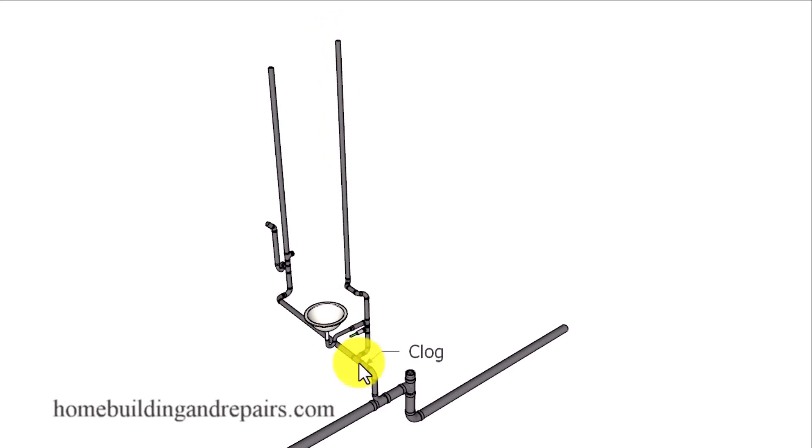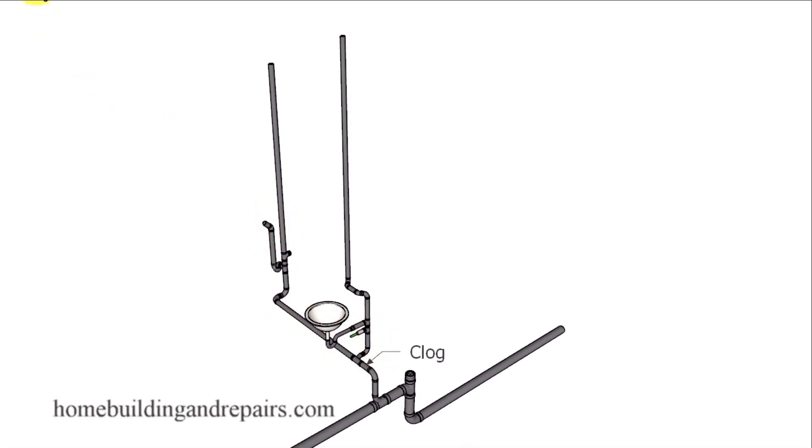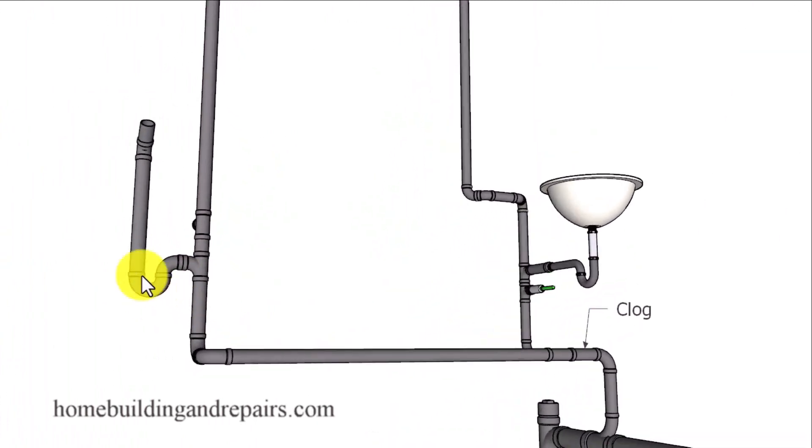However that will not be the case if we move the clog a little further down the line. Because if it's located here and we're going to be running the water into here, we now have an alternative path for the water to come up. And of course if that happens then we could have water coming out of the wash machine drain line.